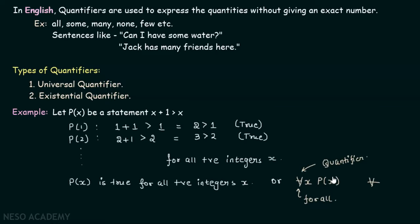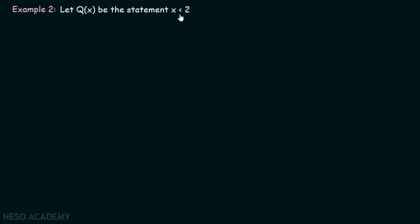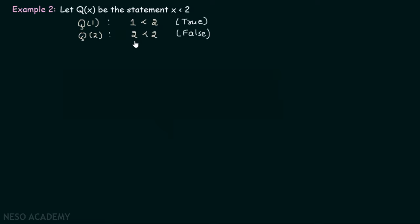Now let's consider one more example. Let q(x) be the statement x < 2, with the domain being the set of positive integers. What is the truth value for q(1)? 1 < 2, so this is true. But what is the truth value for q(2)? 2 is not less than 2, so this is false. And for q(3), q(4), q(5), and so on, this will also be false. So q(x) is only true for x = 1; for the rest of the positive integers it is false.